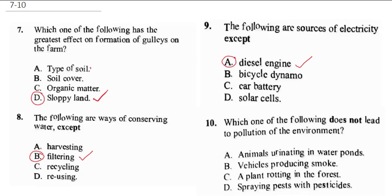Question 10 says: which one of the following does not lead to pollution of the environment? When animals urinate in water points, it pollutes the water and it's not good for drinking. When a vehicle produces smoke, you inhale carbon monoxide, which is hazardous to your health. Spraying pests with pesticide is also harmful and pollutes the environment. But when a plant is rotting inside a forest, it decays and turns to manure — it does not harm the environment; rather, it helps plants and crops to grow better. So the correct answer is C.